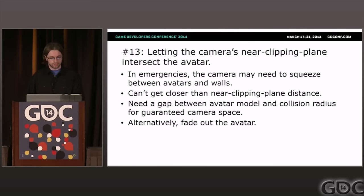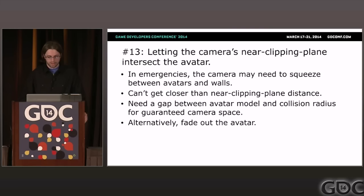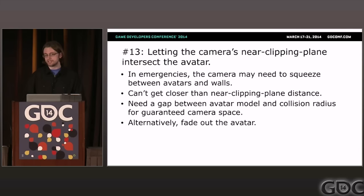Problem thirteen: letting the camera's near-clipping plane intersect the avatar. Virtually all virtual cameras have a near-clipping plane, and anything closer to it gets cut off and leaves a gaping hole in the object. We want to make sure this almost never happens. One way is to make the avatar's collision radius wider than the actual avatar, so they'll never press right up against the wall and you can still fit the camera between the model and the wall.